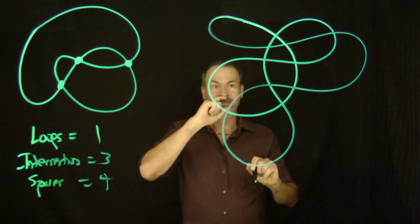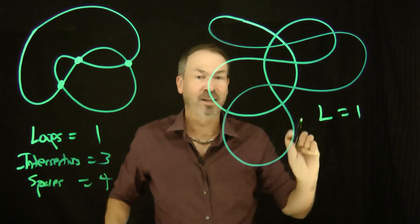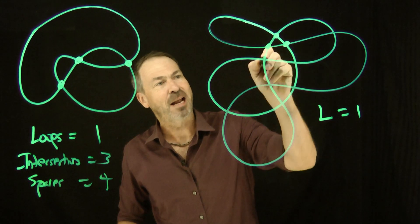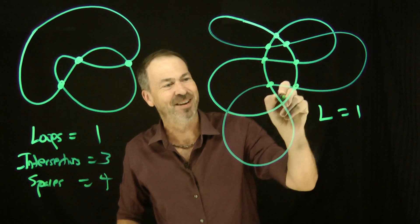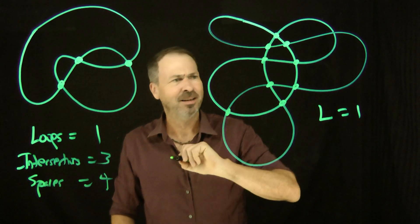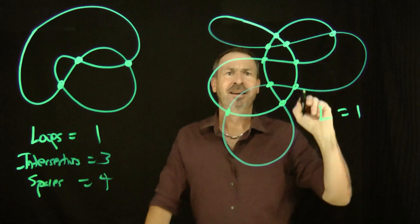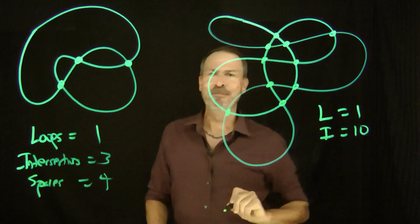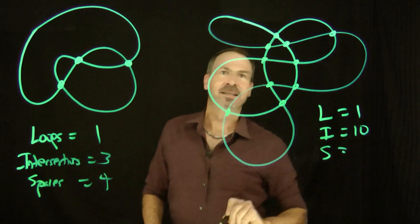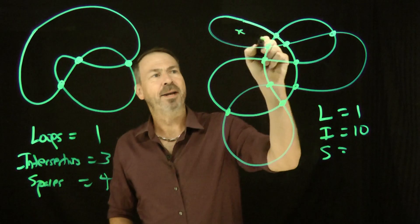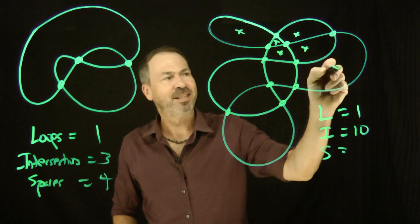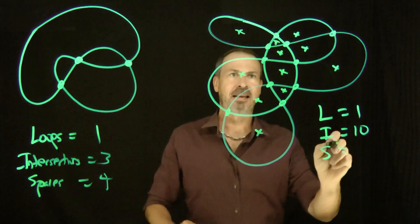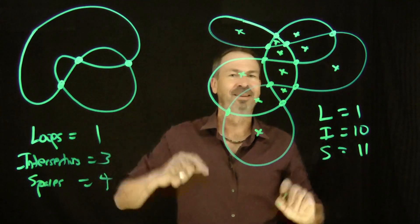This is a more complicated one. The number of loops is still one. Number of intersections — here goes: one, two, three, four, five, six, seven, eight, nine, ten. I think that's it — intersections is ten. And let's count those spaces: one, two, three, four, five, six, seven, eight, nine, ten, eleven. Number of spaces is eleven.